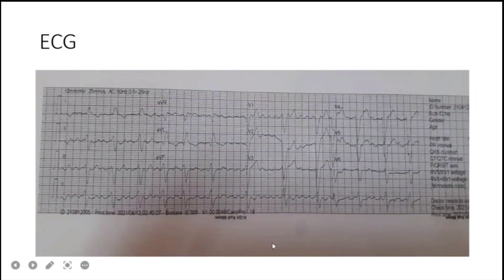This is the ECG of the patient. The rhythm appears to be atrial fibrillation with an irregular heart rate. After careful counting, the heart rate is approximately 90 beats per minute.